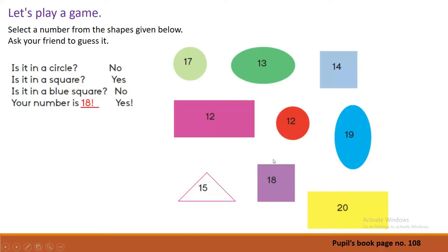Now we have read all numbers. Then you have to select a number from the given shapes. After, ask your friend to guess it.